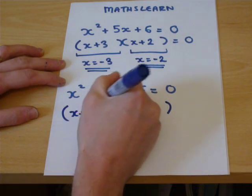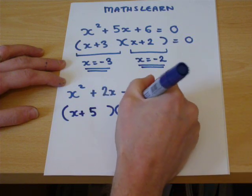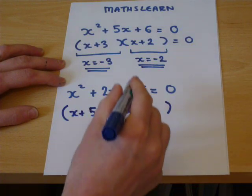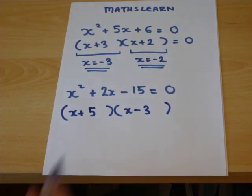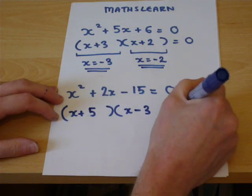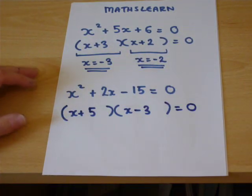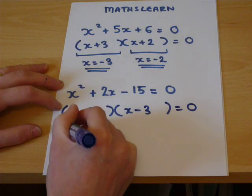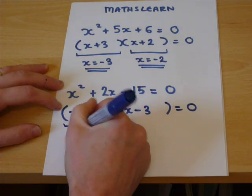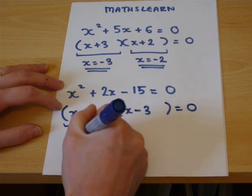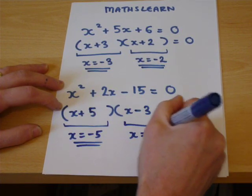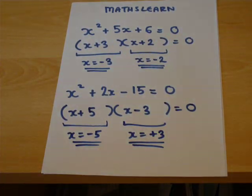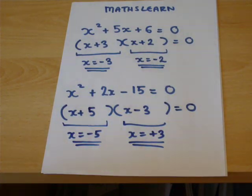However, if I put down 5 and minus 3, 5 times minus 3 is minus 15, 5 take away 3 is 2. I have factorised the expression. Either this equals 0 or that equals 0. So either x is minus 5 or x is plus 3. And they are the two solutions of the second quadratic equation.